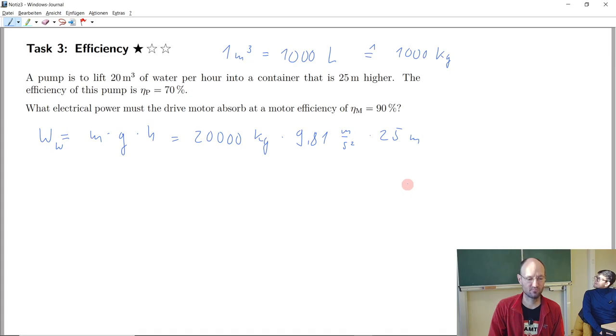So we have 4,903,500 kilograms meters squared per second squared, so it's Joule.